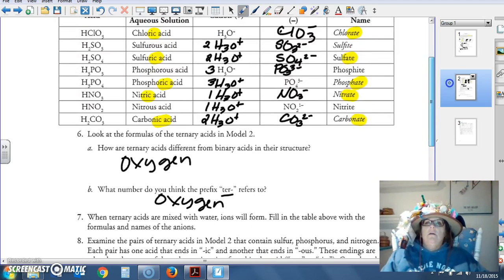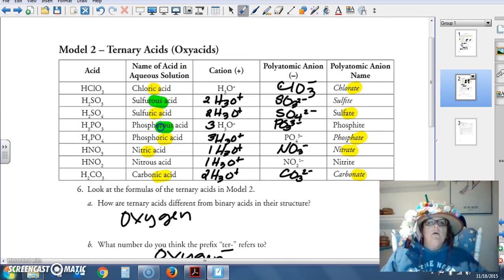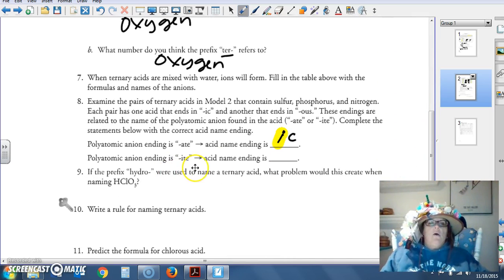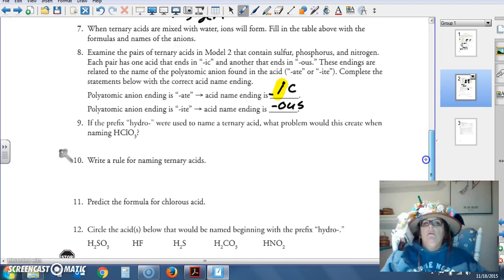Ite is what the other ones are. Sulfurous, phosphorous, nitrous, all end, the anions end in ite. So polyatomic ending in ite, the suffix is ous. So if you ate too much, you'll feel icky. I know it's lame. Get used to it.